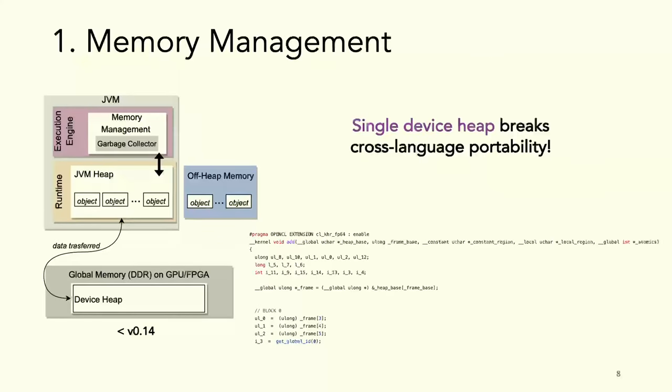Here's the first one: memory management. On the left side, I show a block diagram of what's happening. We have the execution engine, memory management using the garbage collector of the JVM. At runtime, we have the JVM heap where all the application objects are. This was the layout from any release before 0.14 of TornadoVM.